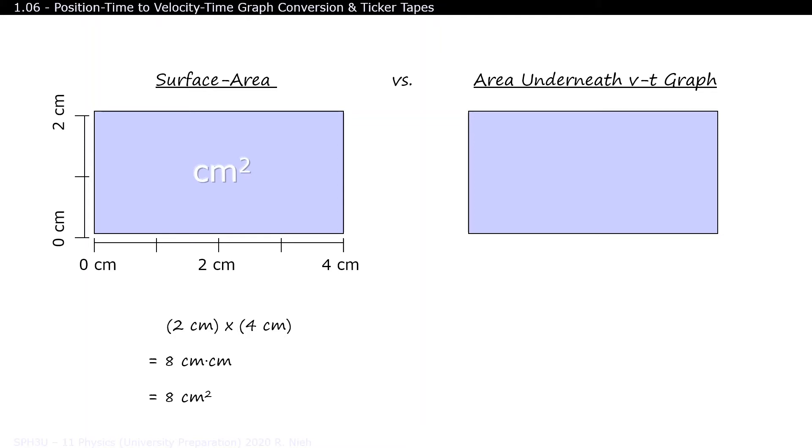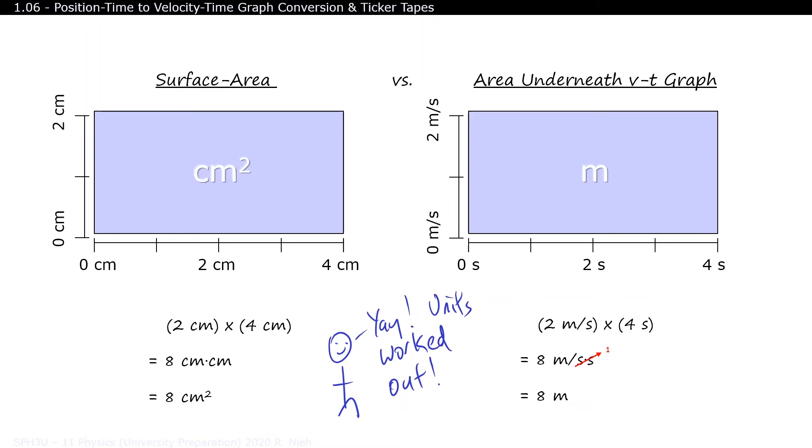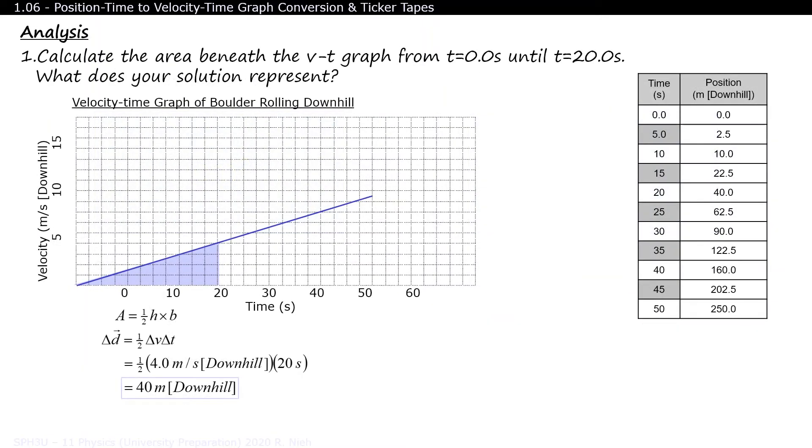But when you're measuring the area underneath a velocity time graph, the dimensions are in meters per second by seconds. Mathematically, this area works out to meters, which is a unit of displacement. Didn't I say that units always work out? So this proves that the area underneath the velocity time graph tells you the displacement of an object.